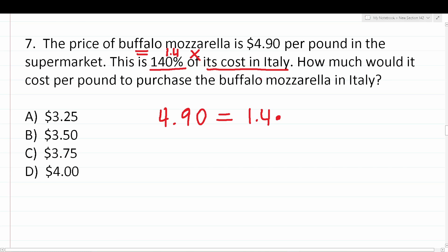So $4.90 is 1.4 times its cost in Italy. We do not know how much buffalo mozzarella costs in Italy — that's what we're being asked to figure out. So that's an unknown value. We can express unknown values with letter variables. Let's refer to the cost of buffalo mozzarella in Italy with the letter variable C. So our equation is: $4.90 equals 1.4C.